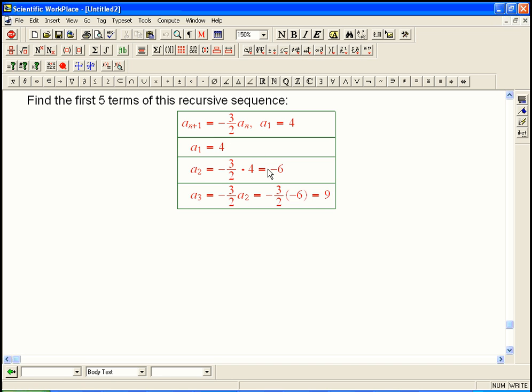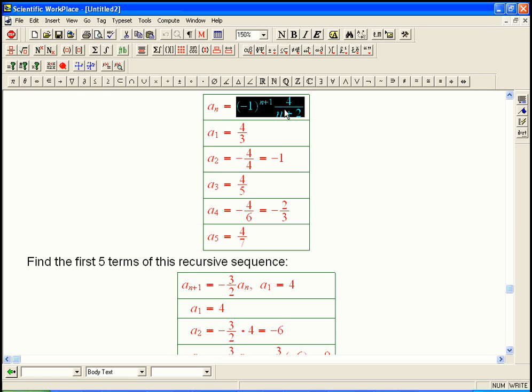Notice the sign is switching each time because I'm multiplying by a negative each time. So it's very easy with a recursive sequence to produce something that alternates sign. And so that a closed form for it, like the analogous to this guy, would need maybe a minus one to a power.